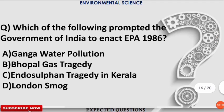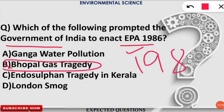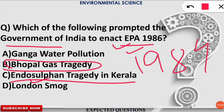The next question: which event prompted the Government of India to enact the Environmental Protection Act (EPA) in 1986? The correct option is B — the Bhopal Gas Tragedy, which took place on the nights of 2nd and 3rd December 1984, prompted the Government to enact the EPA 1986. Also note: the Endosulfan tragedy occurred in Kerala, where excessive use of the endosulfan pesticide affected many lives and was later banned.